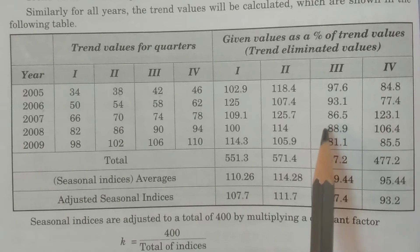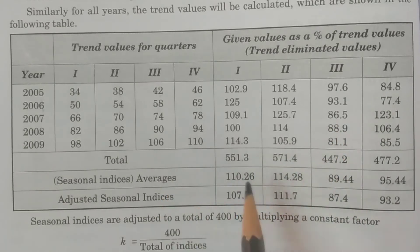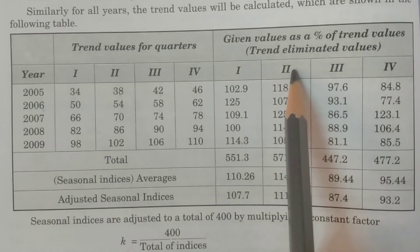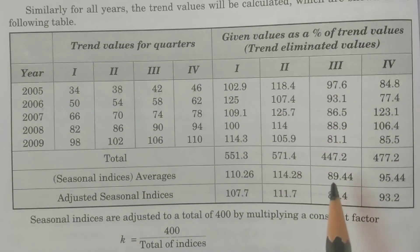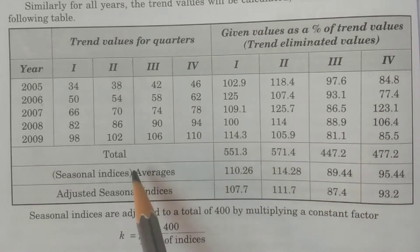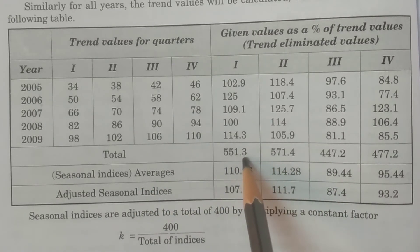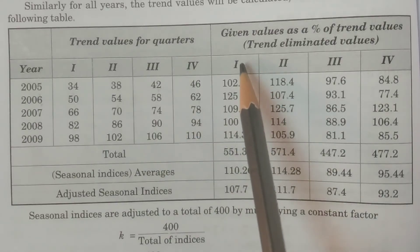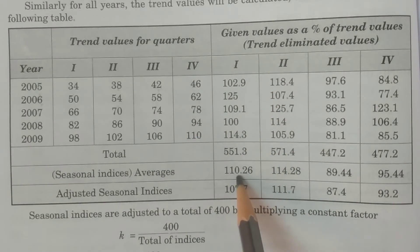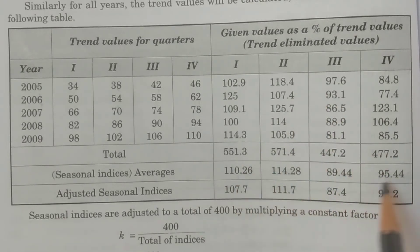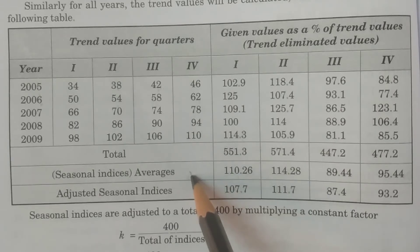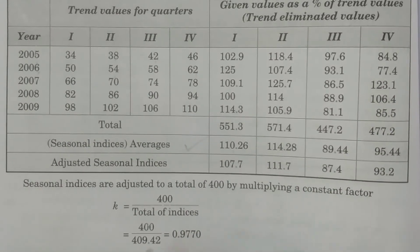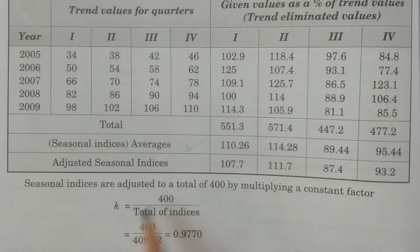After that, get the total for each quarter across all years. Then calculate the arithmetic mean — since there are 5 years, divide by 5 for each quarter-wise value. These are the seasonal indexes. But you have to calculate an adjustment factor k, which equals 400 divided by the total of all indices. The total is 409.42, therefore k equals 400 divided by 409.42, which equals 0.977.